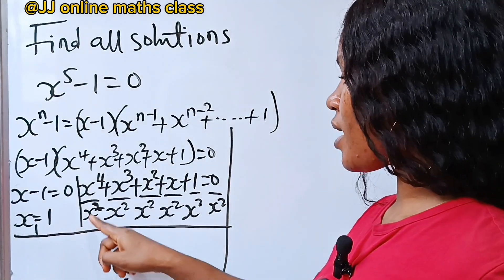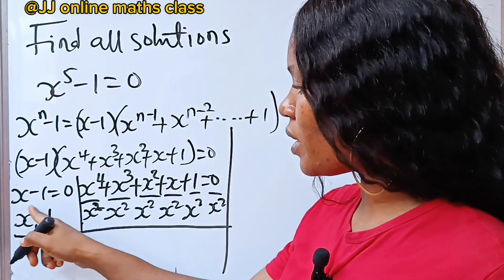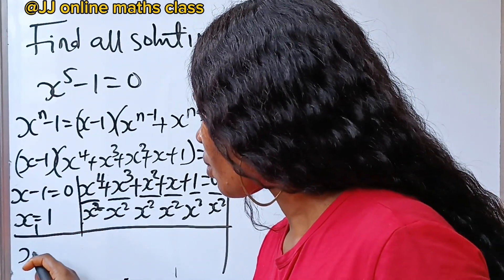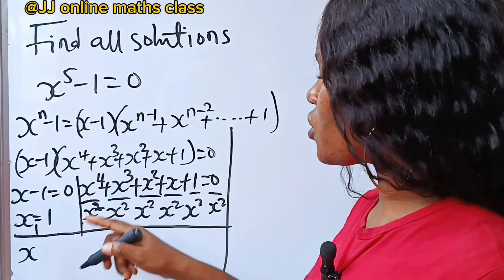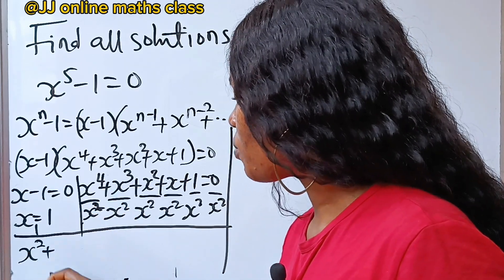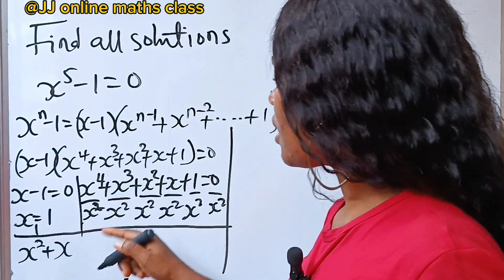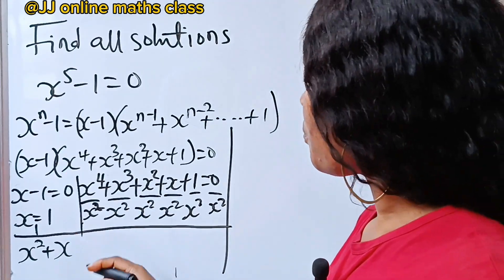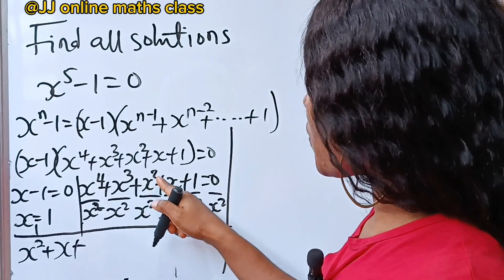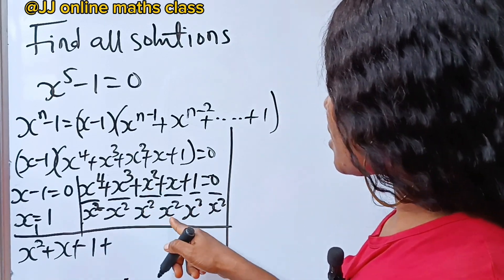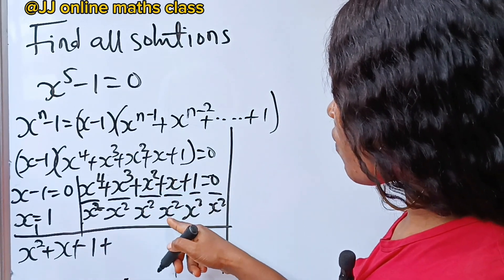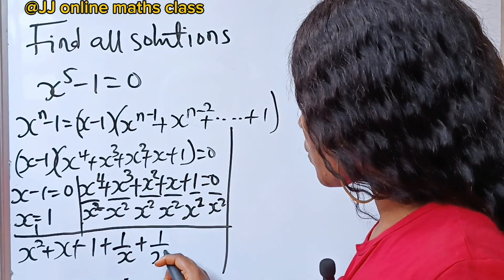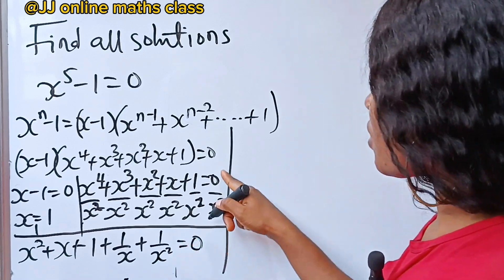In this case we have x and x, so we pick our x. 4 minus 2 gives us x squared. Then 3 minus 2 gives us x to the power of 1. x squared divided by x squared gives us 1. Then plus 1 over x, and plus 1 over x squared, all equal to 0.